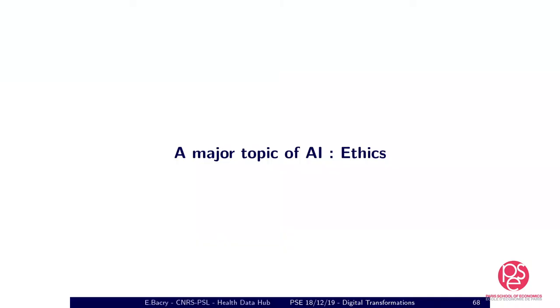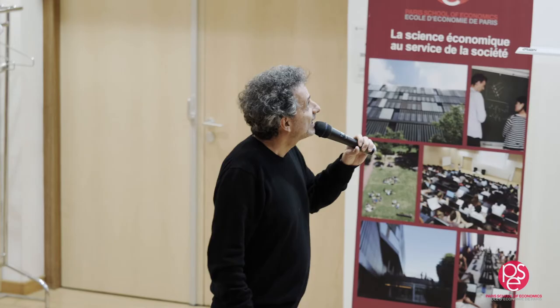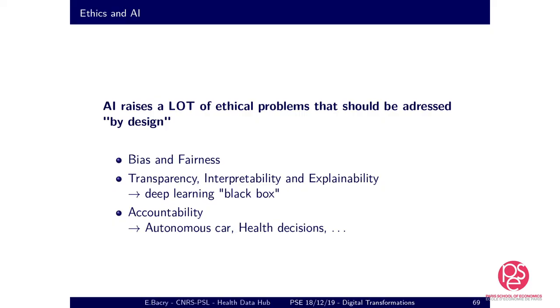I'd like to finish with ethics — a major topic in AI. AI raises a lot of ethical problems that should be addressed by design, when building databases and algorithms. We've already seen bias and fairness, transparency, interpretability, explainability, and accountability. These are major themes of research today for machine learners and AI researchers, but they are very difficult goals to reach. Thank you very much — I hope you learned something.